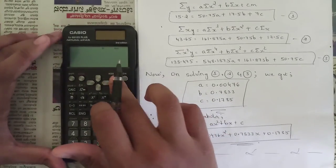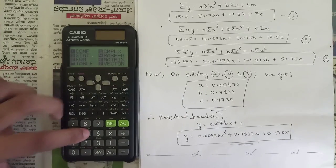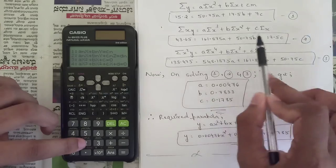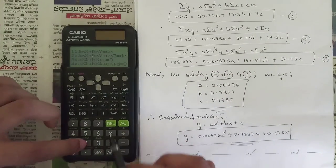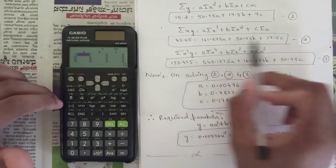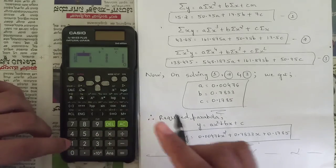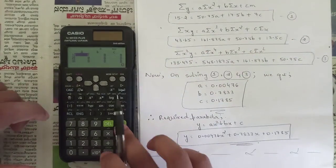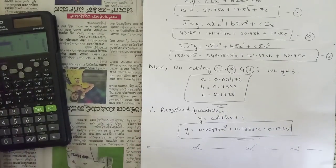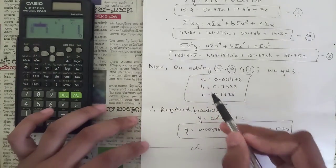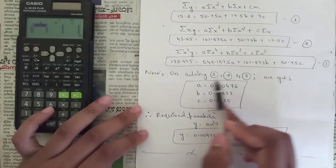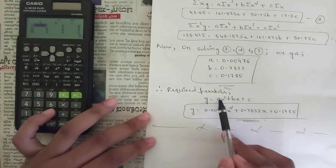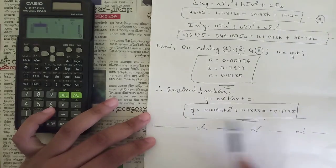To solve the three equations, use the calculator: press Mode, Setup, Equation. Choose the option for three unknowns (anx + bny + cnz + d), then press 2. Enter the coefficients from the three equations — for example, the first row: 50.75, 17.5, 7, and 15.2. After entering all rows and pressing equals, the calculator gives x, y, z corresponding to a, b, and c. Substitute these into y = ax² + bx + c to get the final parabola equation.